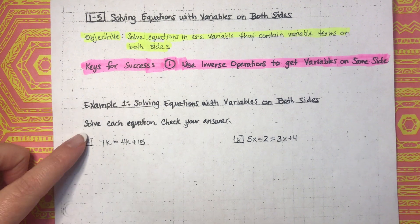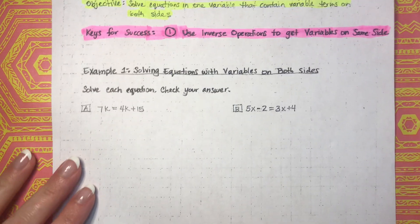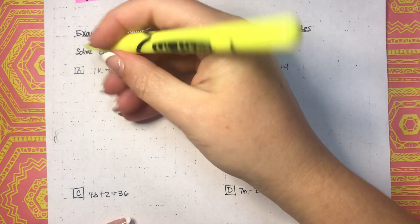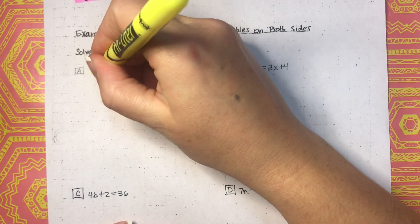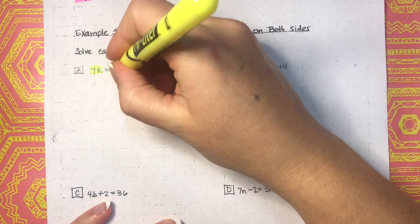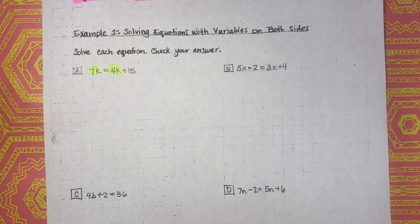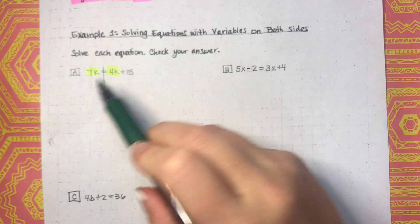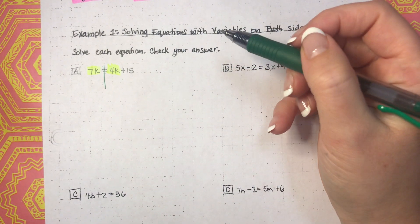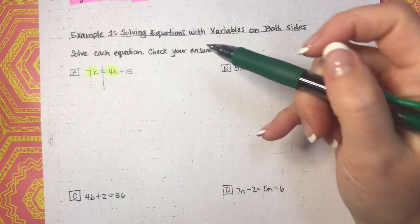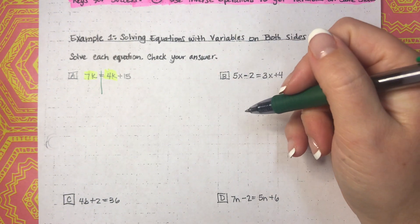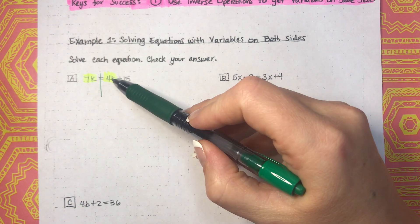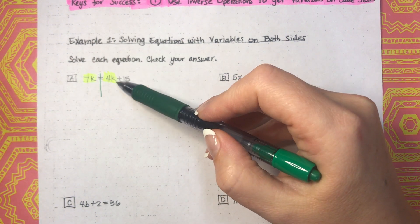We are going to solve each equation and then check our answer. So let's start with the first one. We have 7k and 4k. Our equation is 7k equals 4k plus 15. The equal sign splits the equation into two different sides, and we have variables on both sides.